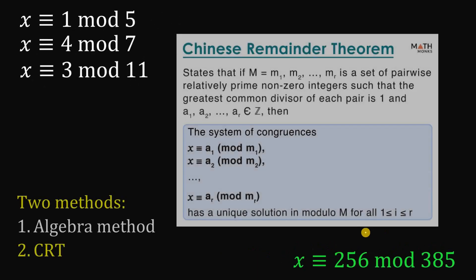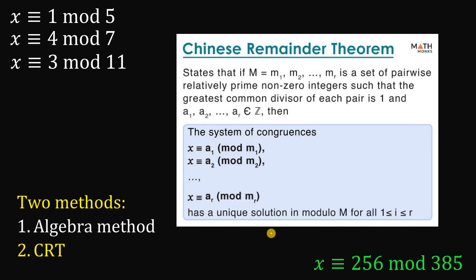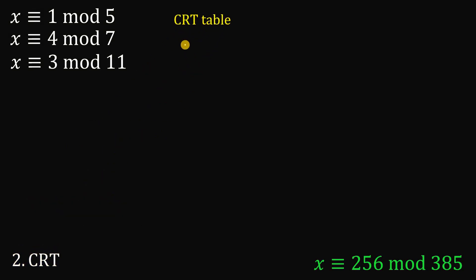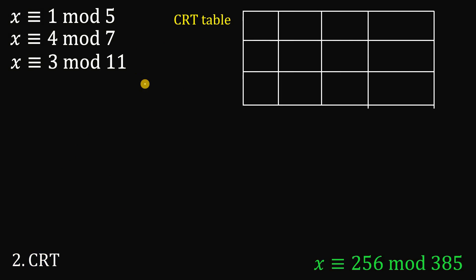Now, how about using the CRT, or the Chinese Remainder Theorem? When you have 4, 5, or 6 congruences, the algebra method becomes a big mess. So we need to use the Chinese Remainder Theorem. Let's create the CRT table. Since we have 3 congruences, we have 3 rows and 4 columns.